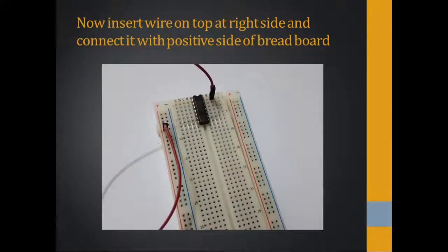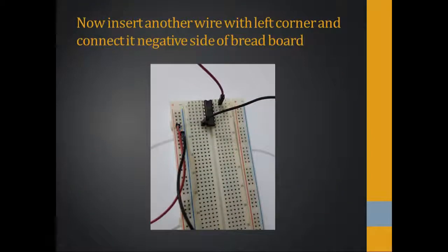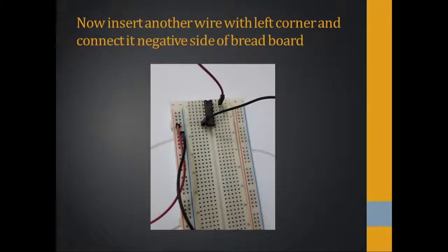Now insert a wire on the top right side of the IC and connect it with the positive side of the breadboard — this is the positive side and I'm connecting this wire here. Then insert another wire at the left corner and connect it with the negative side of the breadboard.